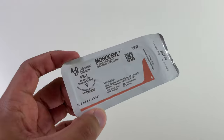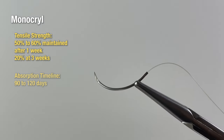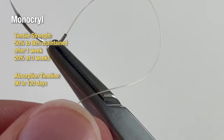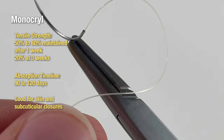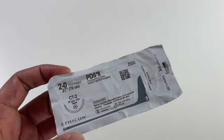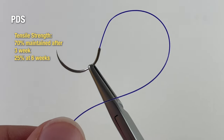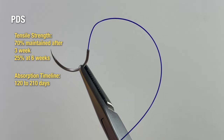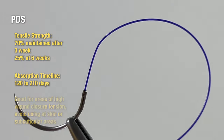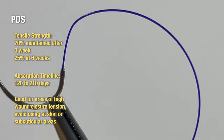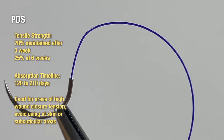Other absorbable sutures include monocryl and PDS. Monocryl sutures maintain their tensile strength for one week but then undergo rapid degradation by about three weeks; they're great for delicate subcuticular closures due to their high pliability. PDS sutures are similar to monocryl in pliability but maintain tensile strength for up to six weeks, making them great for areas with high wound closure tension such as the abdominal wall during hernia repair or a tummy tuck.